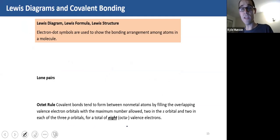So Lewis diagrams and covalent bonding. Let's continue here. So electron dot symbols are used to show the bonding arrangements among atoms in a molecule. So again, I already did this. So maybe I got ahead of myself a little bit, but I'll just show that right here.